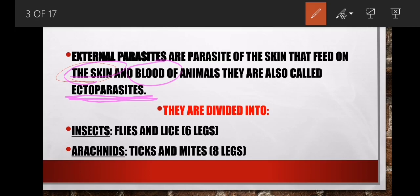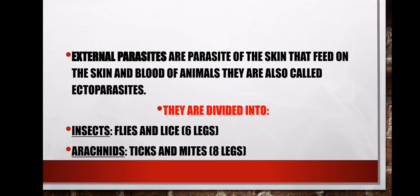External parasites are divided into two groups: insects and arachnids. The difference is simple — insects have six legs while arachnids have eight legs. Flies such as the blowfly and the nasal worm fall under insects. Lice also fall under insects. Ticks and mites fall under arachnids.